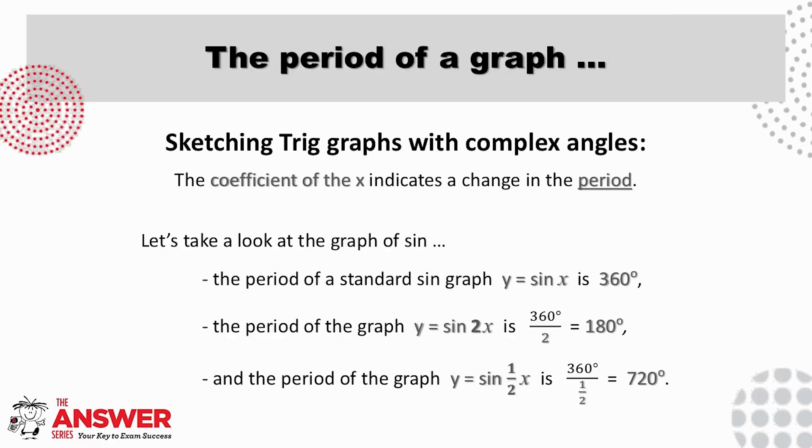Now for the period of a trig graph, again we will look at sine. We know that the number of degrees for one full wave of a standard sine graph is 360 degrees, and so 360 degrees is therefore its period. What happens then to the period when the angle is more complex? Well, it's the coefficient of the x that impacts the period, and we can use this coefficient to help us calculate this adjusted period.